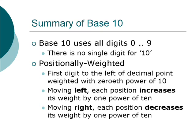This means that the first digit to the left of the decimal point is weighted with the zeroth power of 10. 10 to the power of 0 is 1. Therefore, the first digit to the left of the decimal point is saying how many ones there are. Moving left, each position increases its weight by 1 power of 10. Moving right, each position decreases its weight by 1 power of 10.